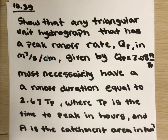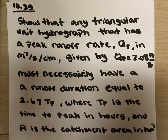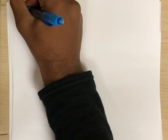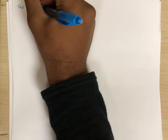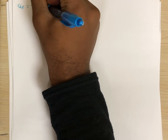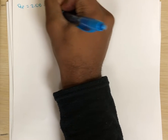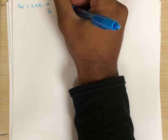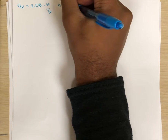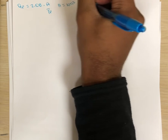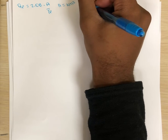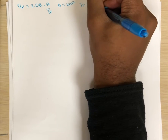Where tp is the time to peak in hours and A is the catchment area in kilometers squared. So to begin the problem, let's mark down the variables we are given, which is that the peak flow rate, qp, is equal to 2.08 times A over tp. We also know that the area is in kilometers squared and that the time to peak duration tp is in hours.